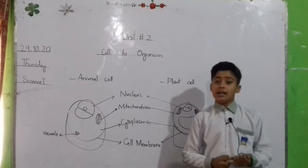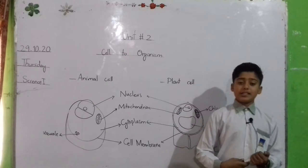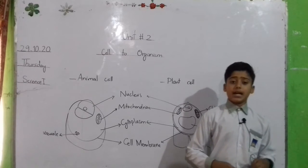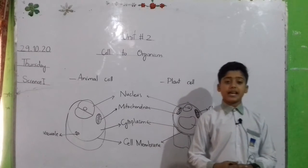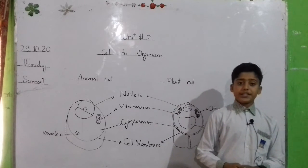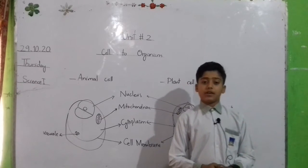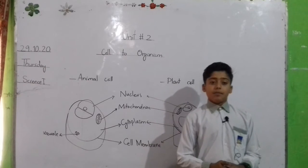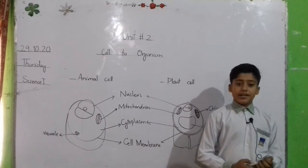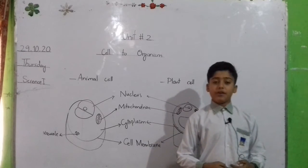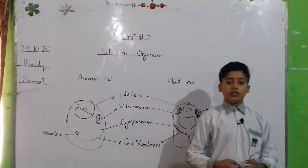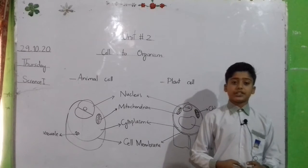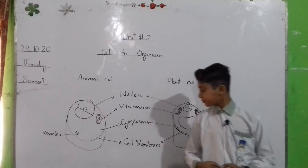Cell wall. It is present in only plant cell. It is absent in animal cell. It is the outermost covering of the plant cell. It is made up of hard material called cellulose. It gives a structure and shape to the plant.